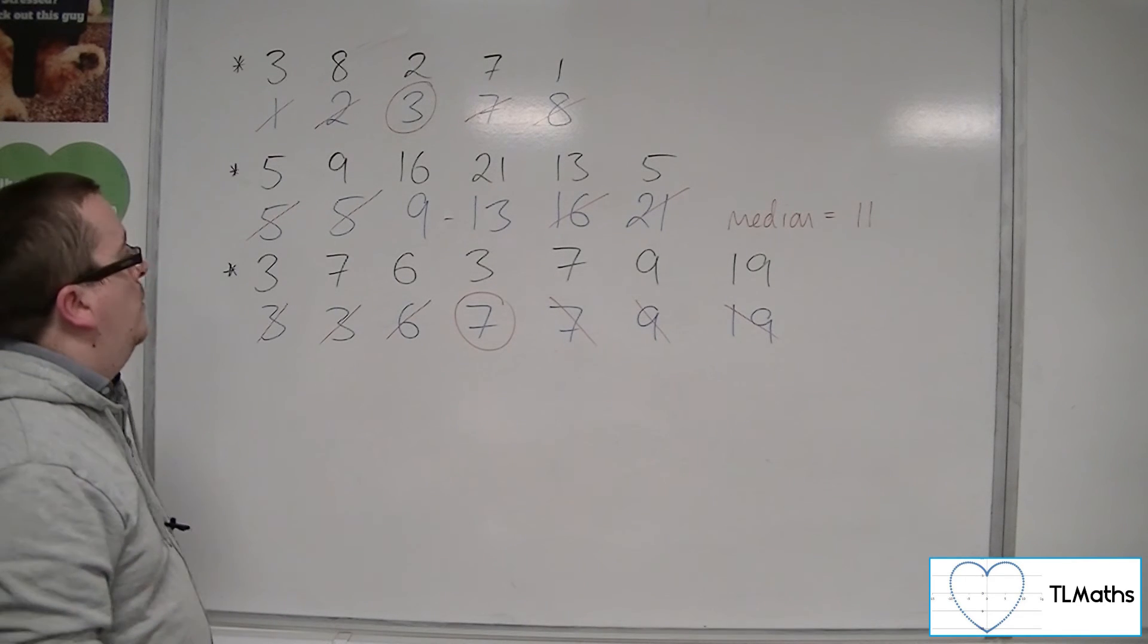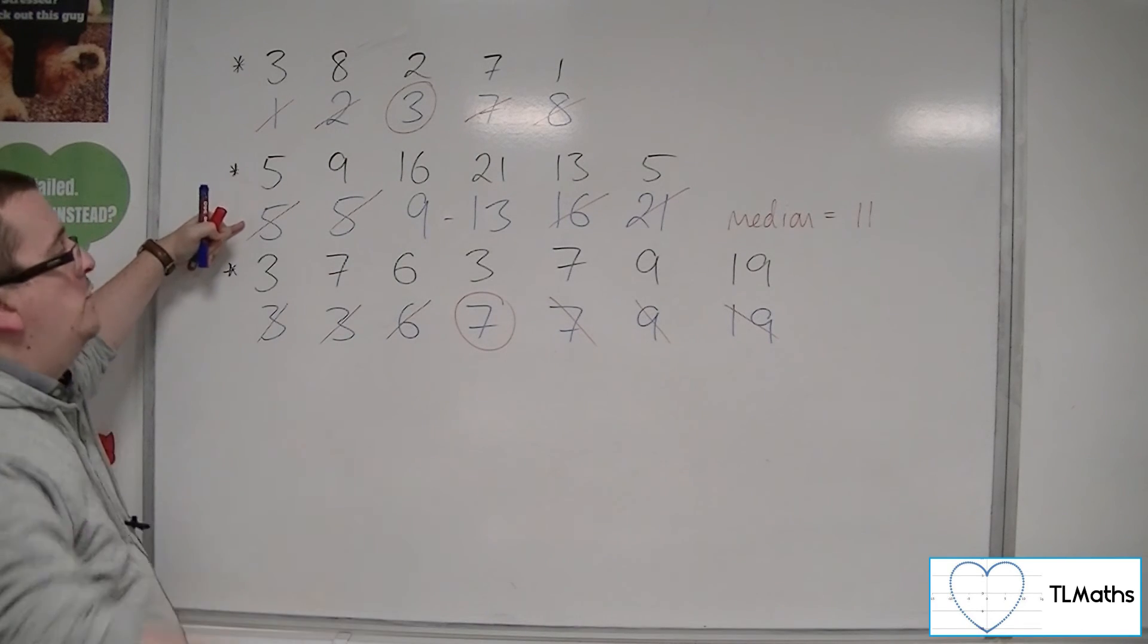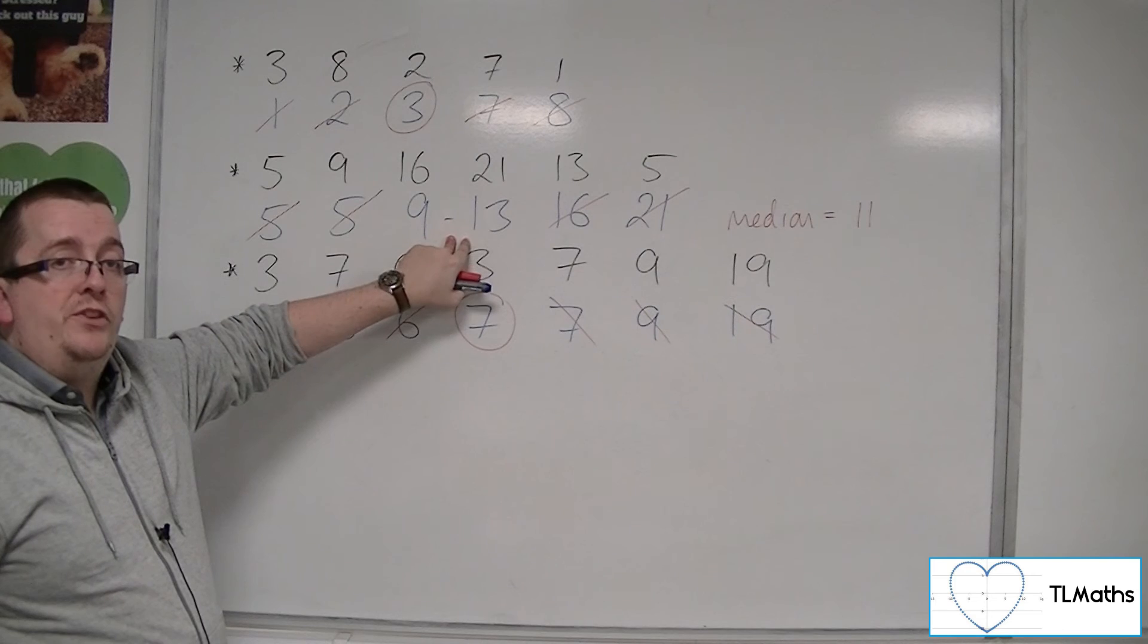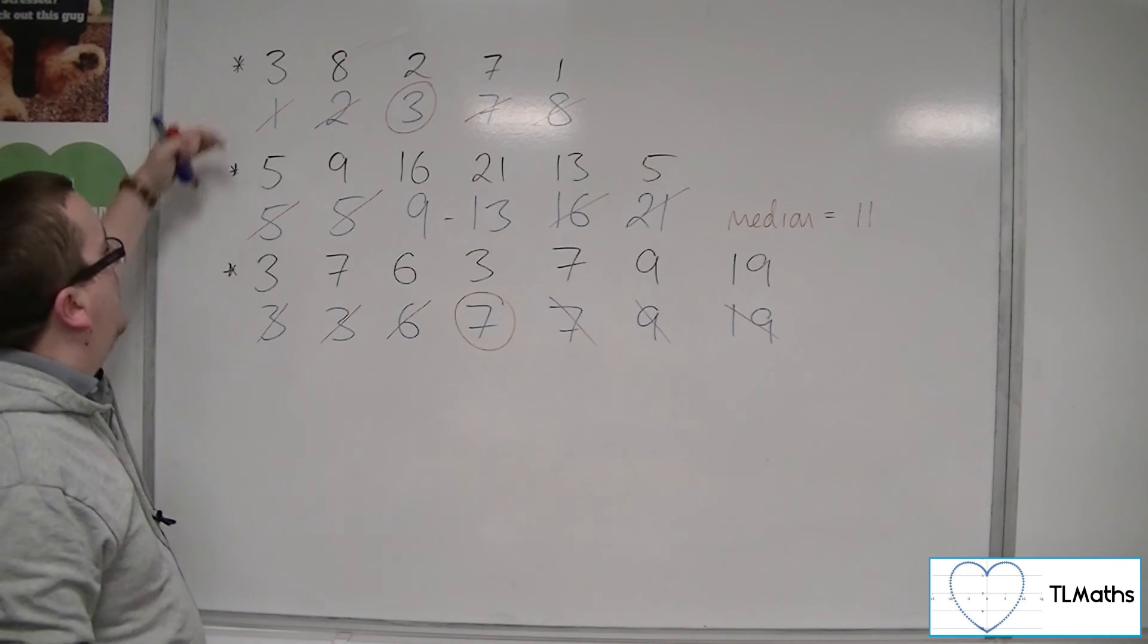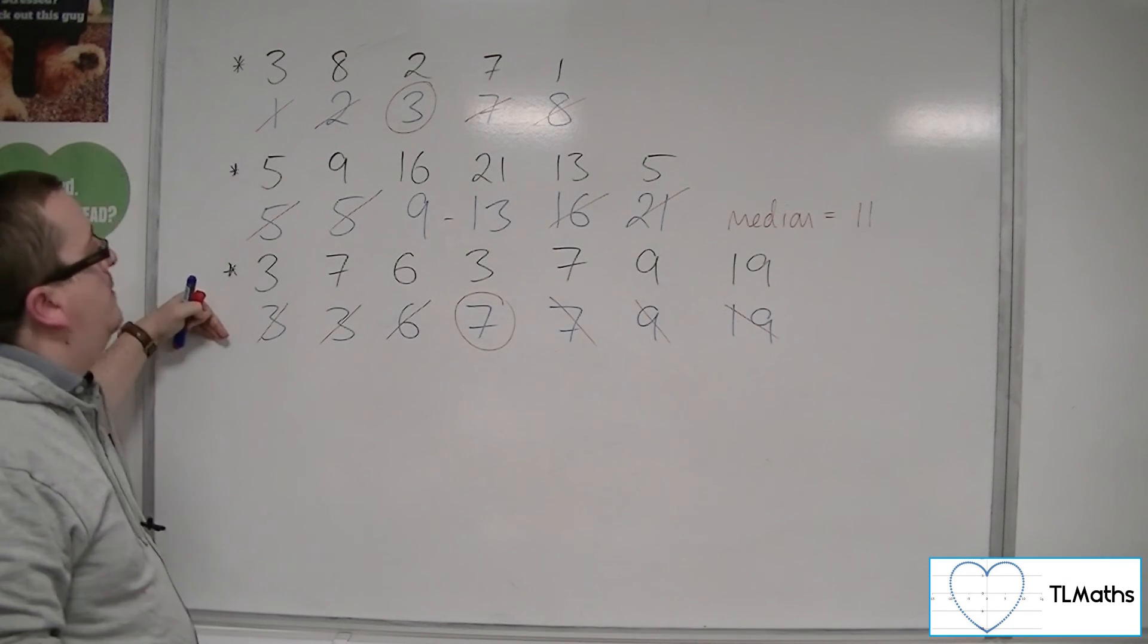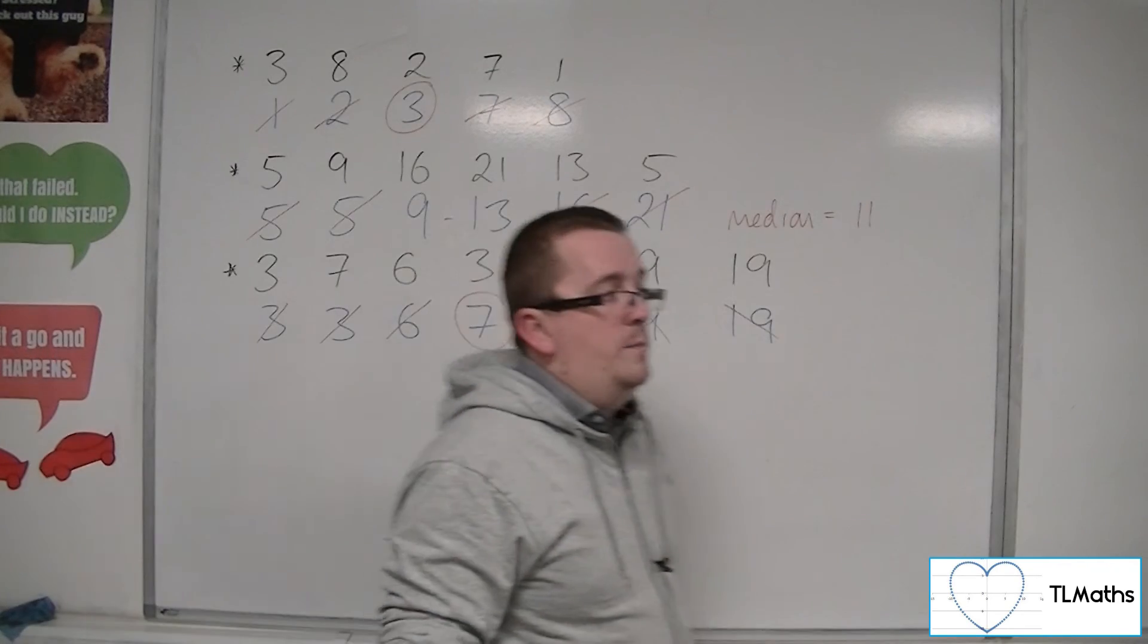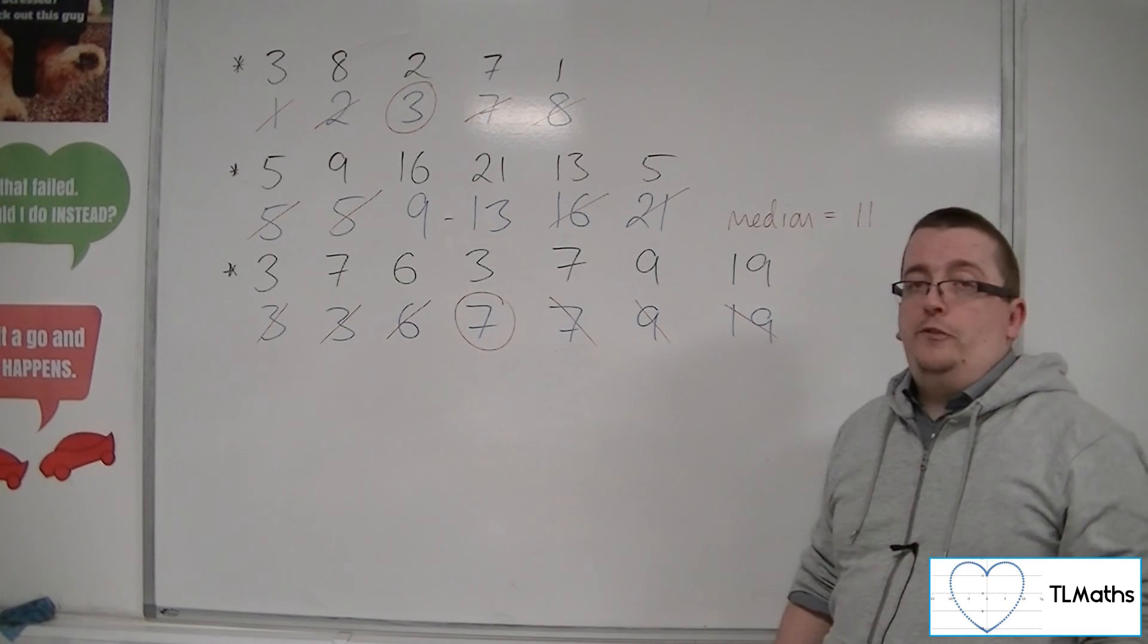So with an even number of numbers, you'll come down to the middle of the two in the middle. And if you've got an odd number of numbers in both the first and third case that we've got here, then you'll home in on a singular median value that's in your list already.